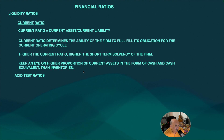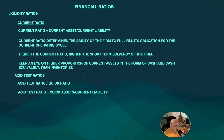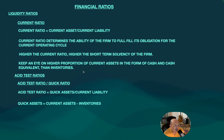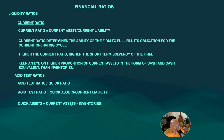Acid test ratio, also called quick ratio, means immediate cash. It is quick assets divided by current liability. Quick assets are current assets minus inventories. This solves the problem with current ratio by excluding inventory, so only cash, cash equivalents, and other assets are considered.